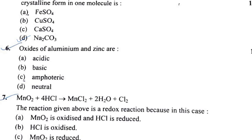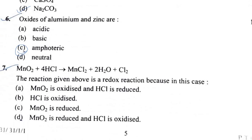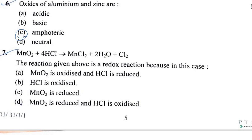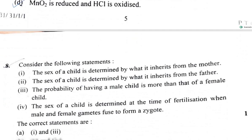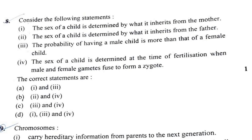Question 6: The oxides of aluminum and zinc are amphoteric. Question 7: MnO2 converts MnCl2 — we understand that MnO2 is oxidized and HCl is the reducing agent. HCl + H2O, so option D is the answer here.